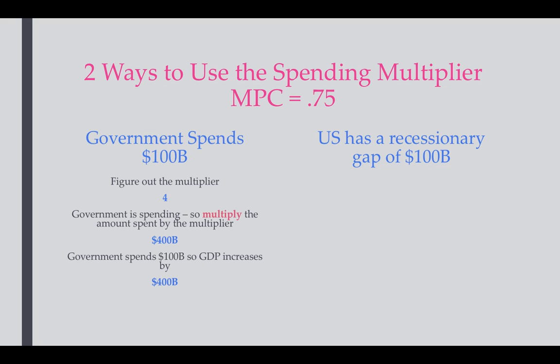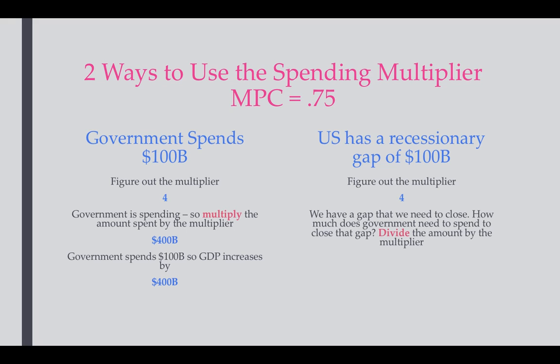The second way: suppose the U.S. has a recessionary gap of $100 billion. The multiplier is still 4. Now we want to know how much the government needs to spend to close the gap. We're given the final amount — the economy is $100 billion short. So we divide the gap by the multiplier: $100 billion divided by 4 equals $25 billion. If the government spends $25 billion, it will close the recessionary gap of $100 billion.